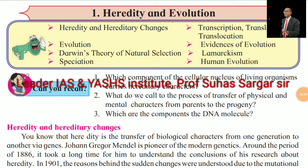Welcome to LIDER IS and Yashas Institute in Navi Mumbai. I am Prof. Suhas Sargar. Today in this video, we are going to learn the self-explanatory chapter from State Board of Maharashtra Standard 10 English Medium, Science and Technology Part 2, Chapter 1: Heredity and Evolution. Topics include Heredity and Hereditary Changes, Evolution, Darwin's Theory of Natural Selection, Speciation, Transcription, Translation, Translocation, Evidences of Evolution, Lamarckism, and Human Evolution.